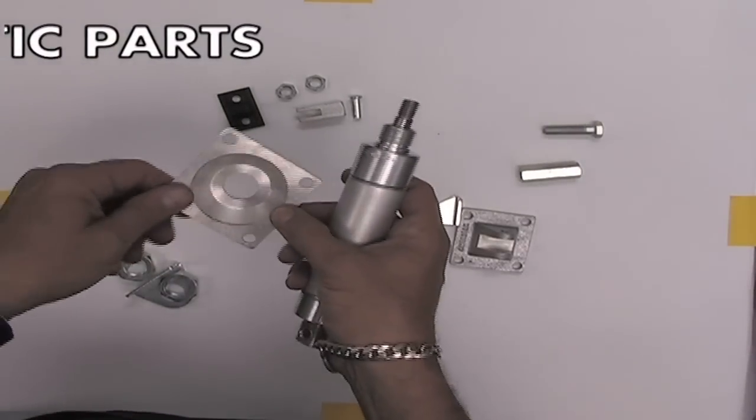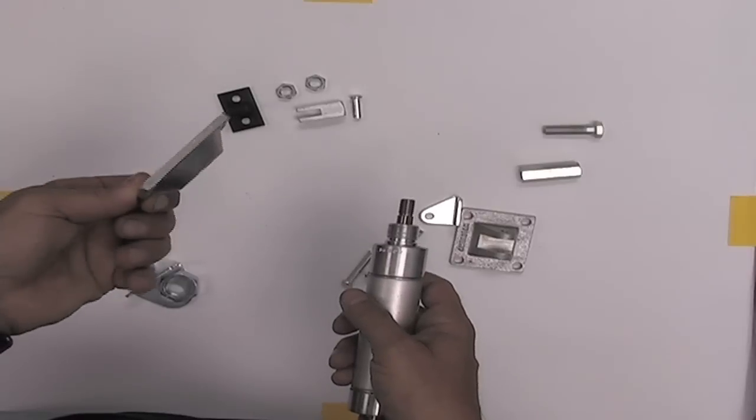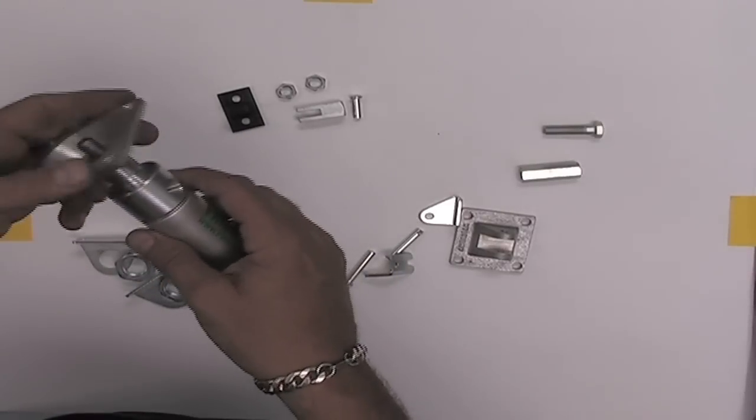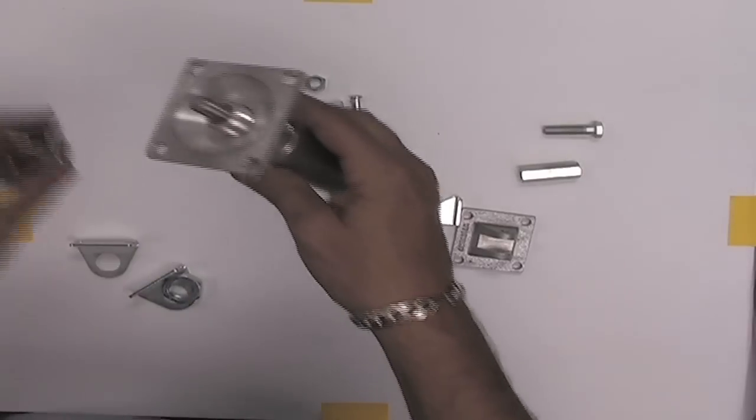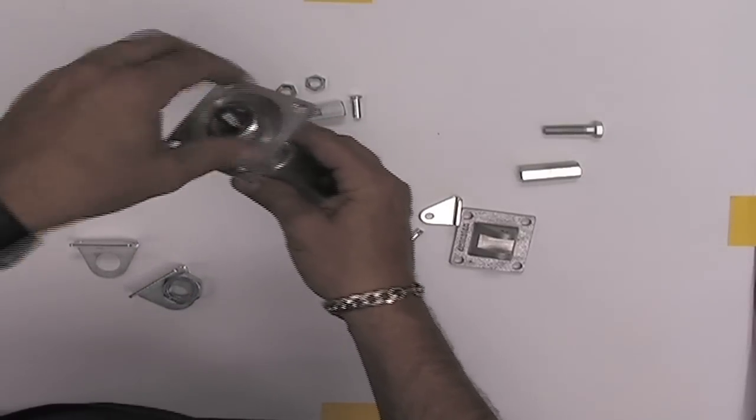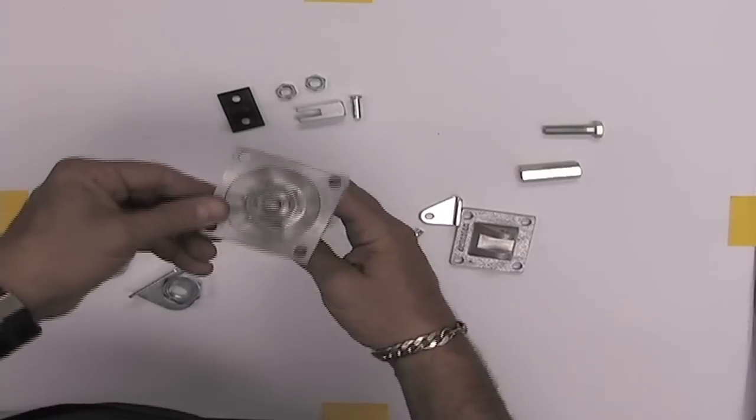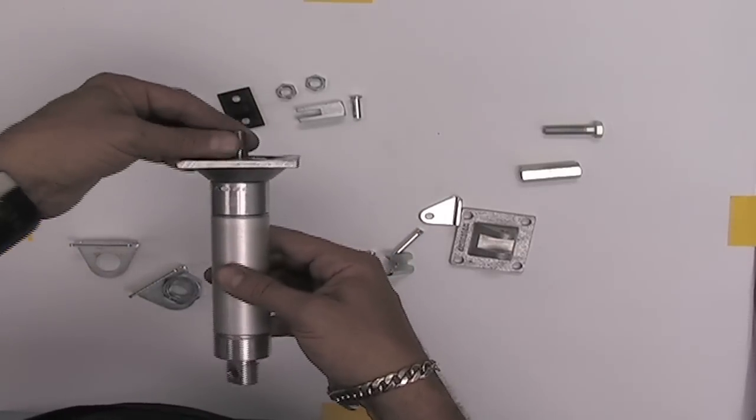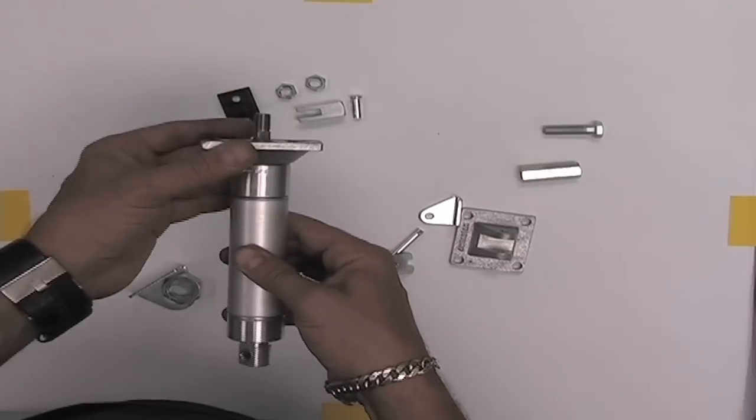Another rigid mounting option is the flange. This is normally mounted to the front of the cylinder with a cylinder mounting nut, and this can be mounted inside of a box or something of that nature to hold the cylinder in place.